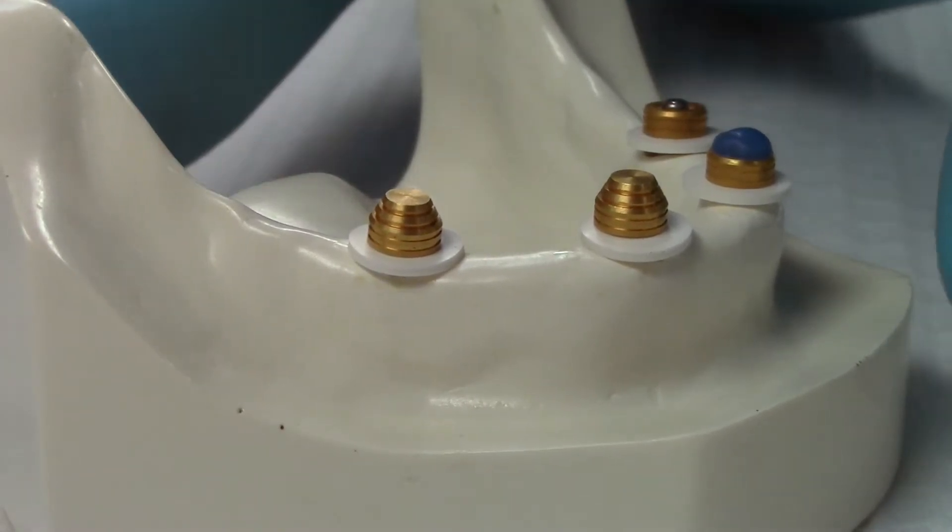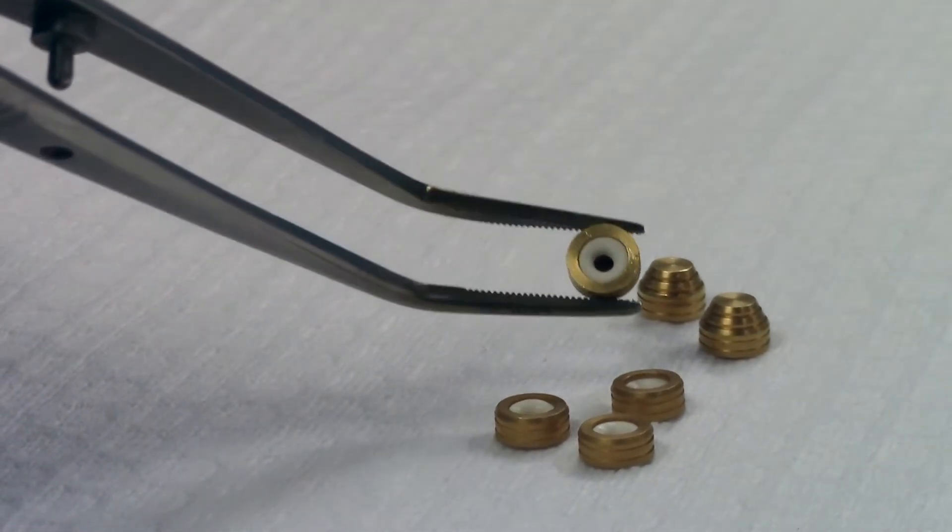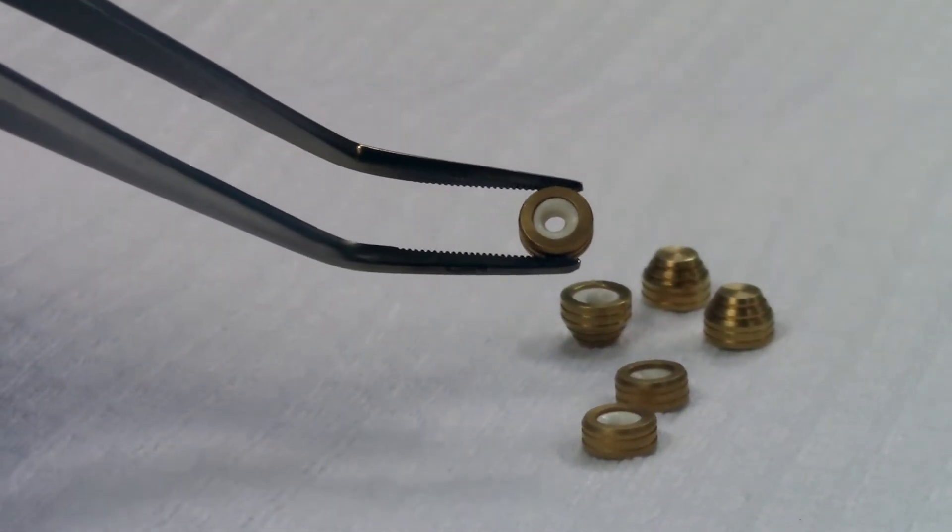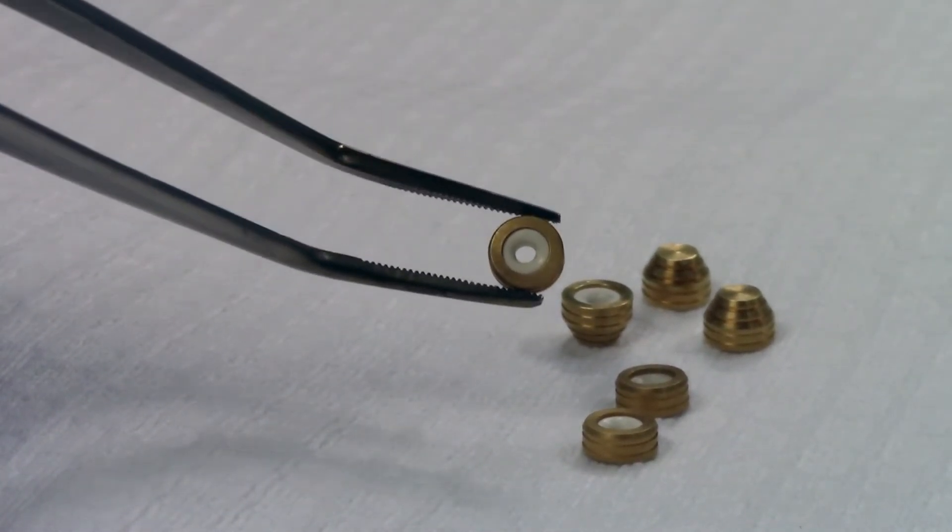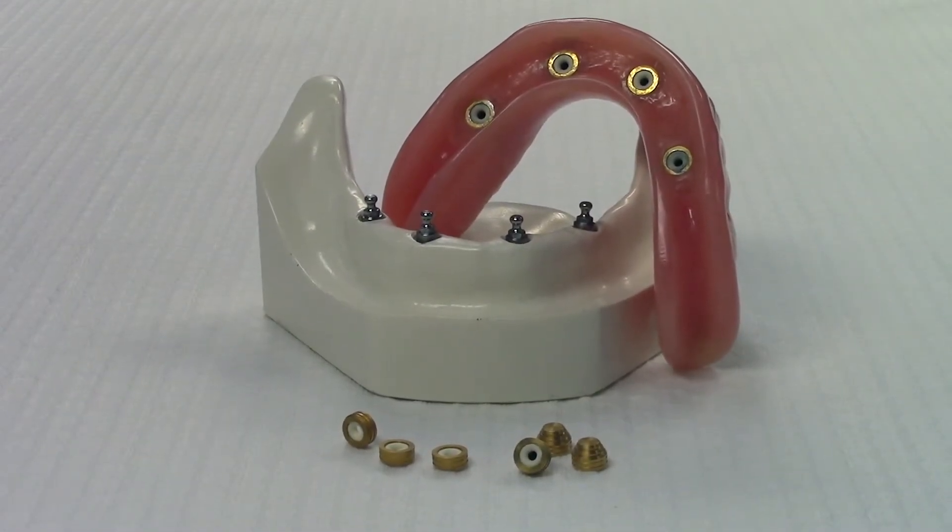The retention cap does this block out for you. That's why the retention cap is much more popular. The vertical space requirement is the same as the ring, but there is no block out material that you have to remove through the ring after processing.